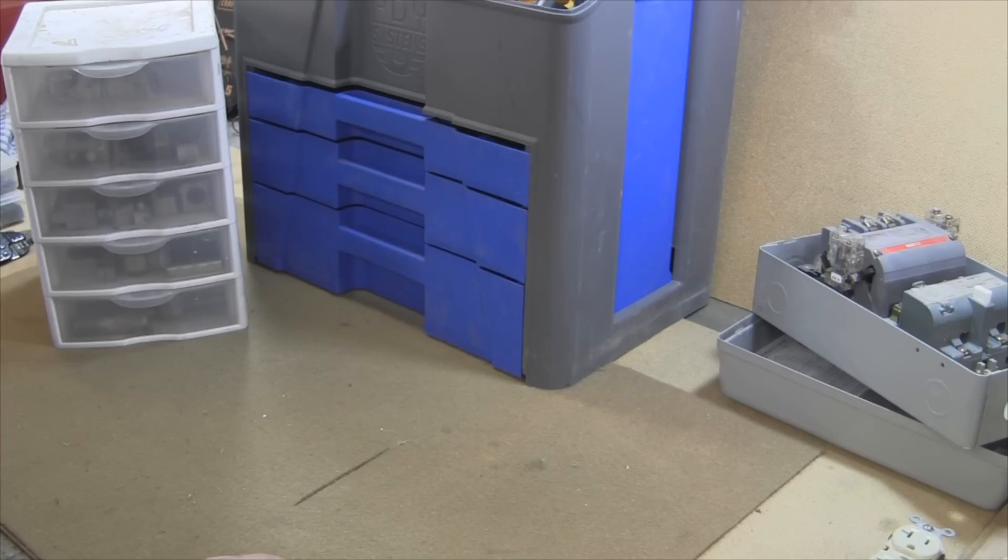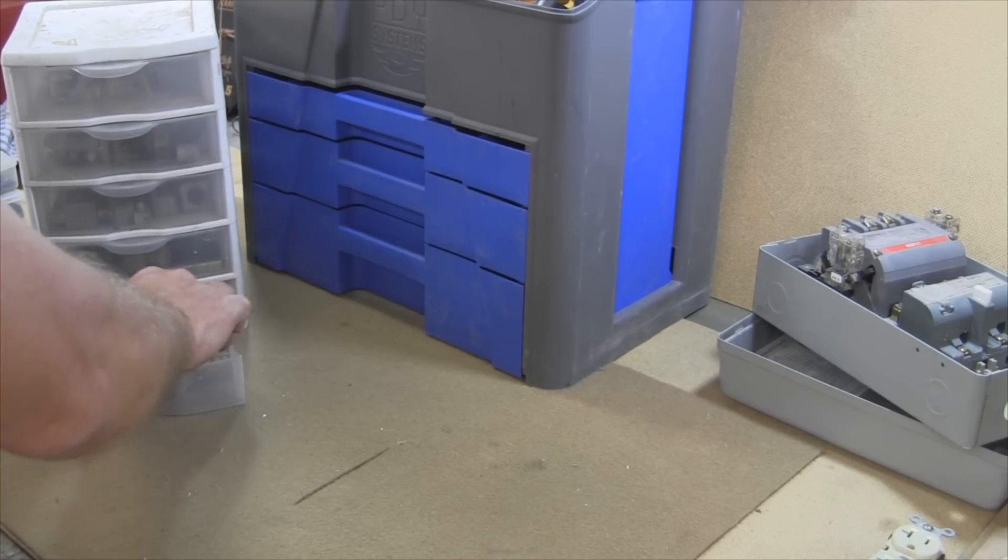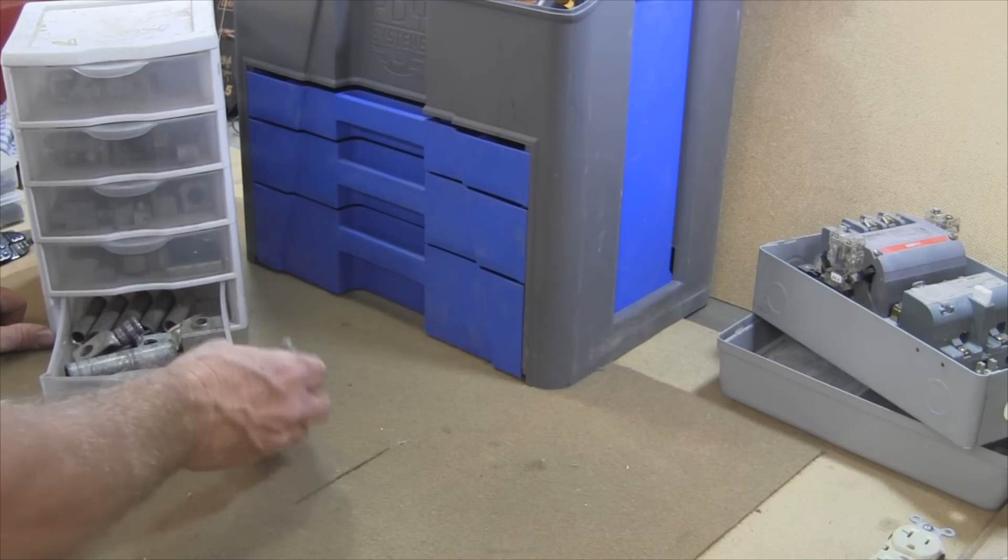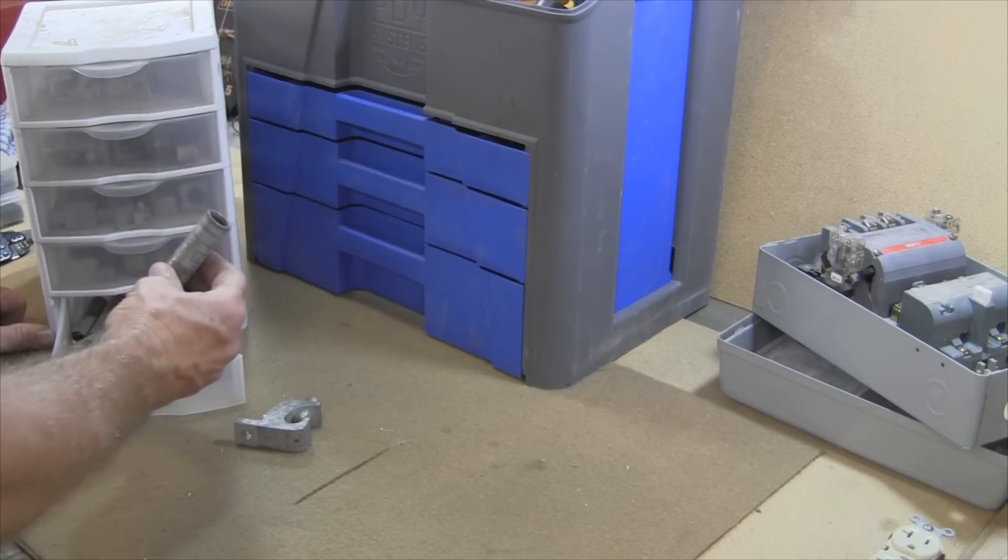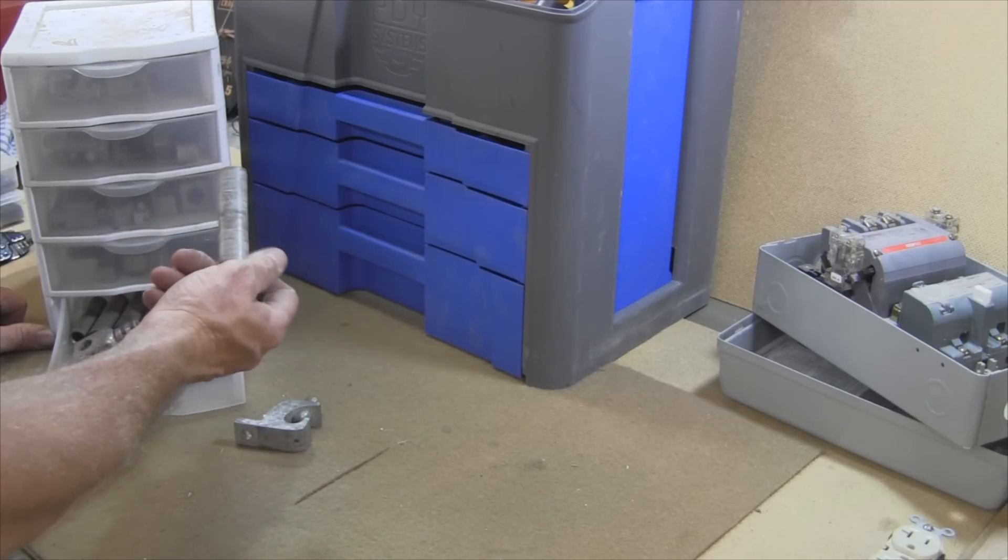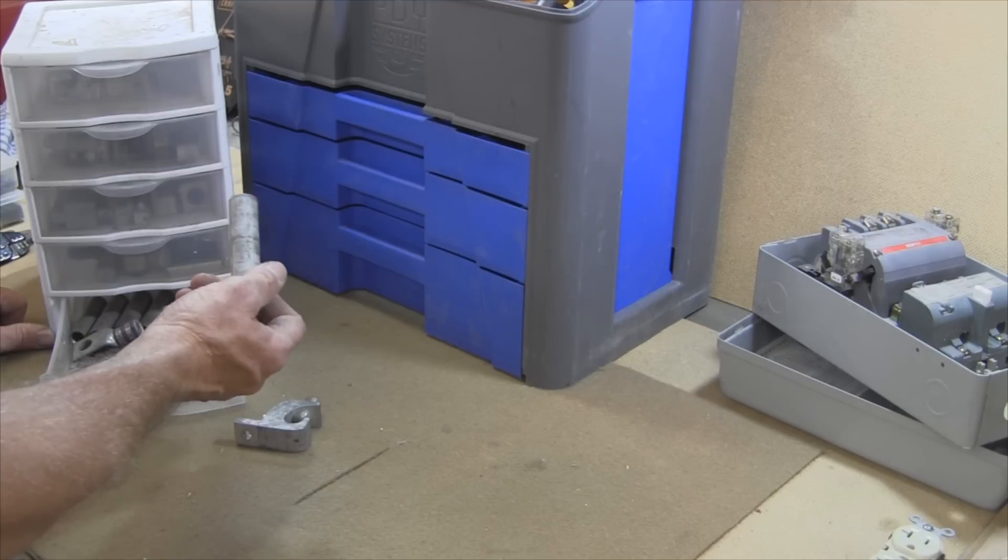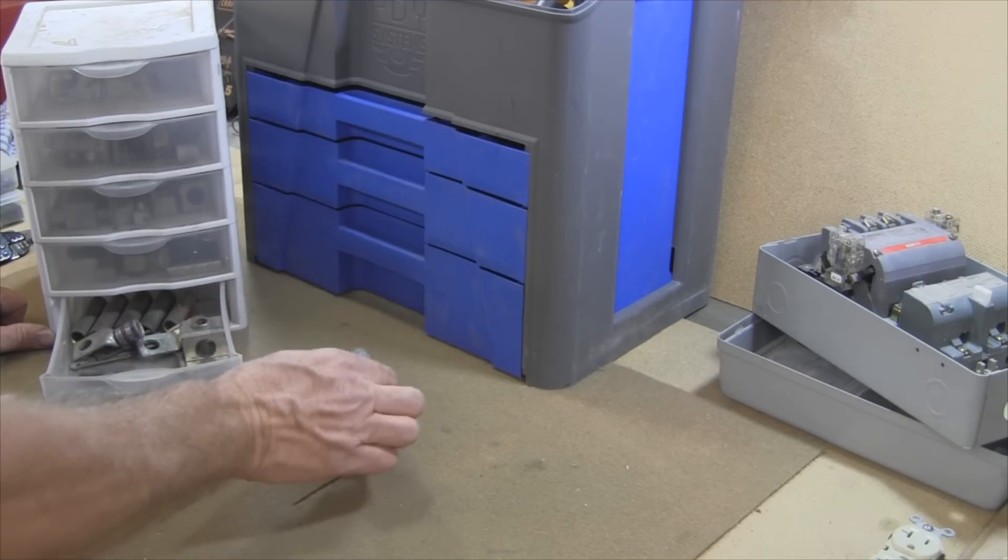In the last video I showed you some of the smaller terminals and crimps and stuff. This is for some larger stuff. It's getting into your panels and your service sections, butt splices, that's a 4-0, perhaps if you happen to pull your feeders a little short.